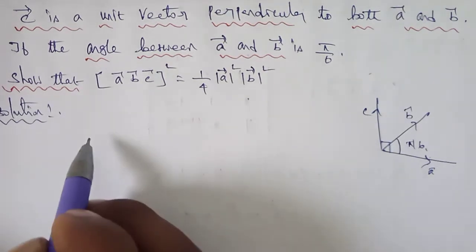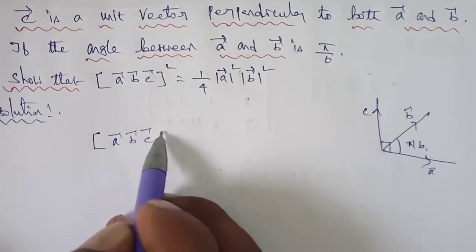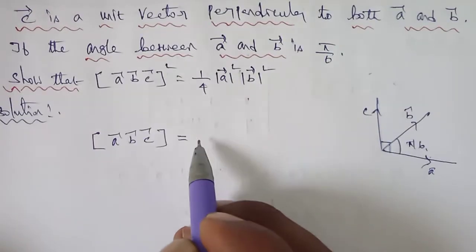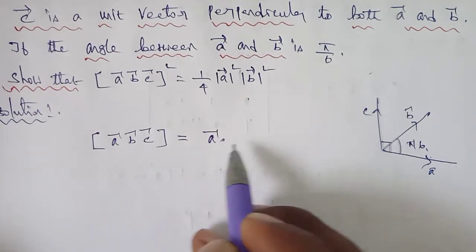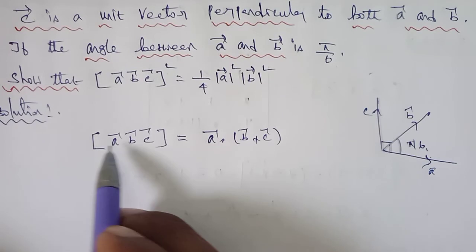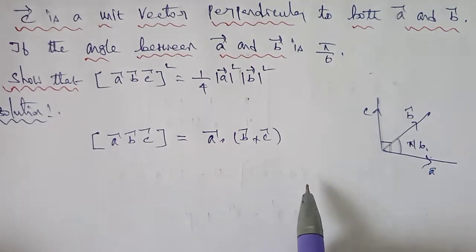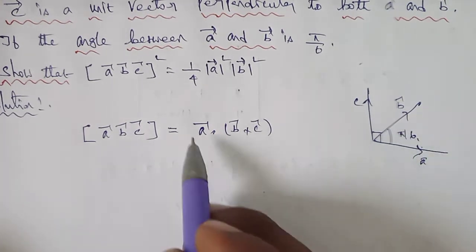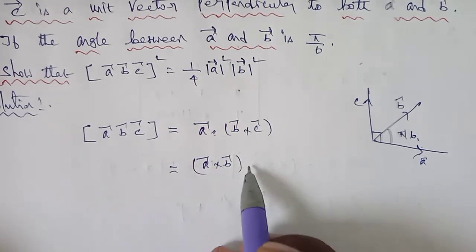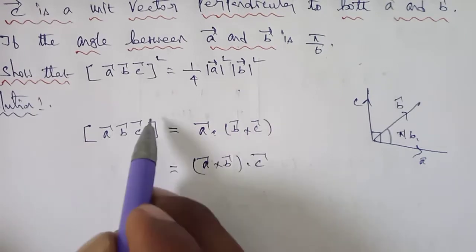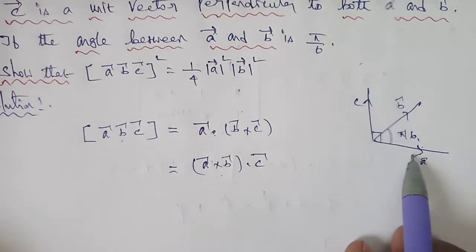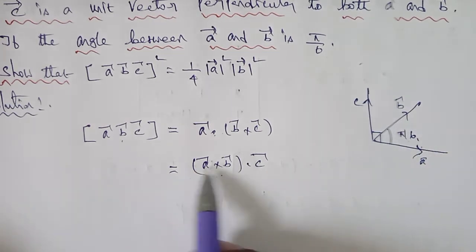Consider the box product a vector, b vector, c vector. The box product is a scalar triple product: a vector, b vector, c vector. This equals A cross B dot C. The angle between A and B is π/6.